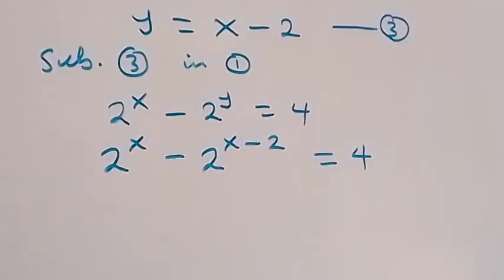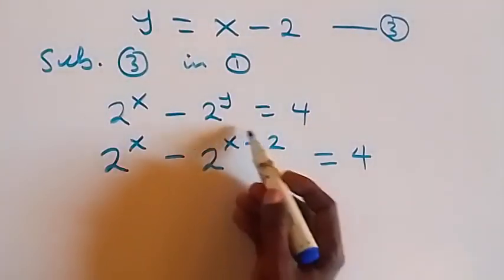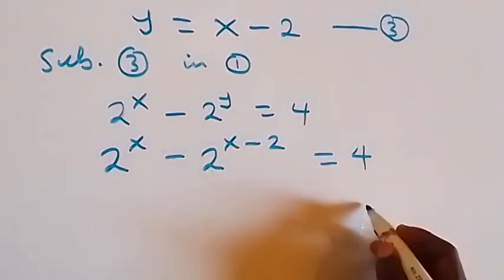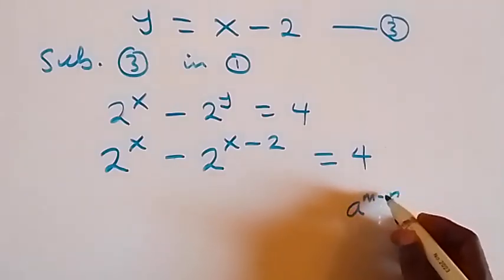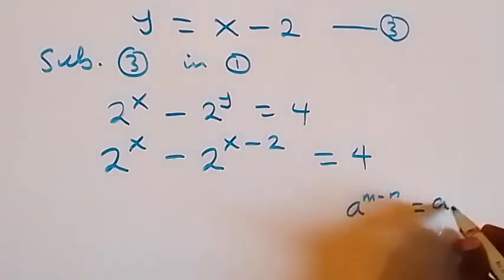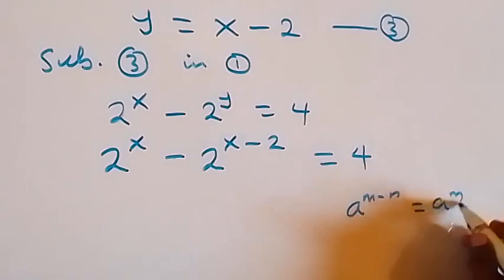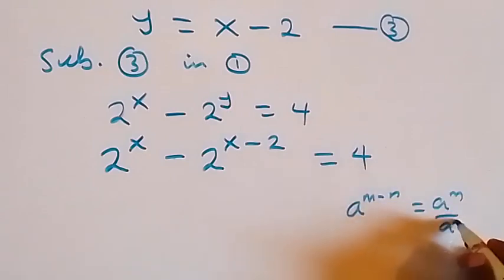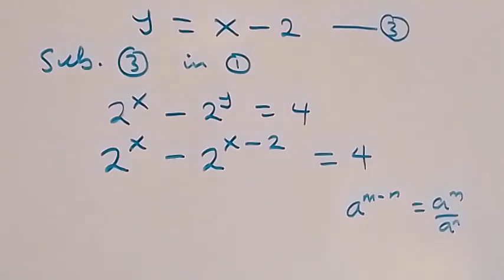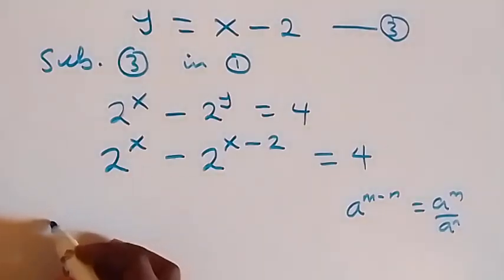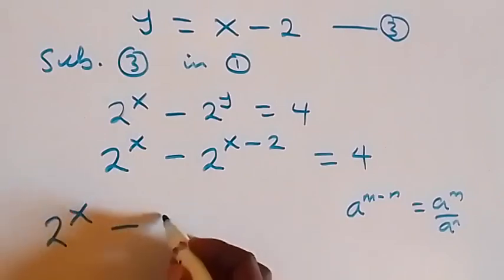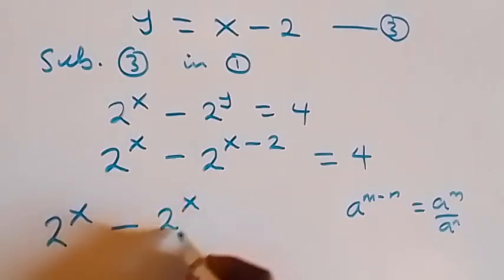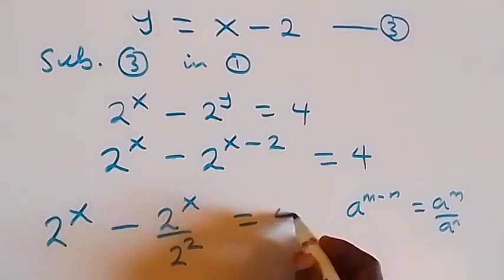From the law of indices, when we have a raised to power (n minus m), it is the same as a raised to power n over a raised to power m. Applying this here, we have 2 raised to power x minus 2 raised to power x over 2 raised to power 2, equals to 4.